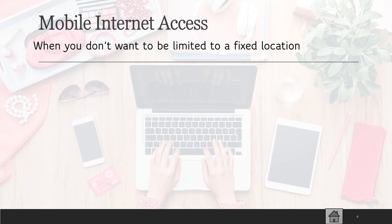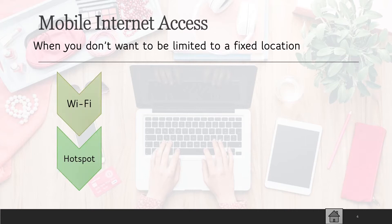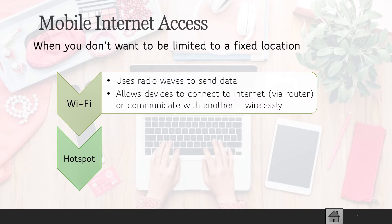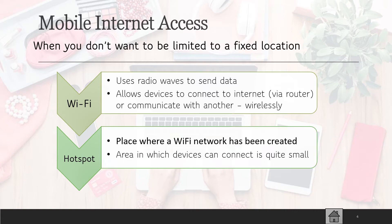When you don't want to be limited to a fixed location, you will use mobile internet access. Either you have Wi-Fi or a hotspot. With Wi-Fi, it uses radio waves to send data and allows devices to connect to the internet via a router, or they can communicate with one another wirelessly. With a hotspot, it's a place where a Wi-Fi network has been created and the area in which devices can connect is quite small.